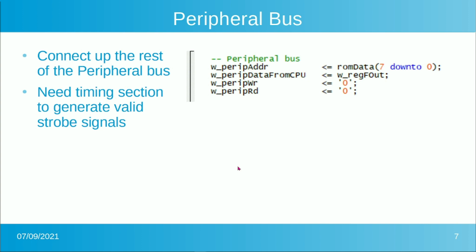Connecting up the peripheral bus is pretty simple. We'll make signals for it — if you hooked up directly, peripheral address on your peripheral to the ROM data would do the job. If this is pushed up to a higher level, these signals can be grabbed from there. For now, we won't do any actual peripheral writes, so we'll just set the strobes to zero. The data from the CPU always comes out of the register file — you can only do IO writes from the register file. And that's pretty much all you have to do for that.